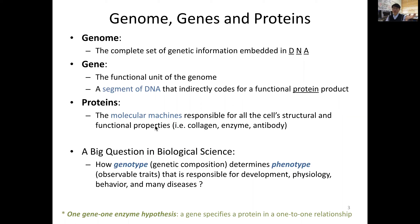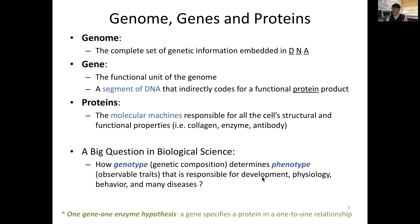For example, a structural protein such as collagen is the most abundant protein in our body. Enzymes are proteins, and antibodies, which serve an important immune function, are also proteins. In biology and biomedical science, the biggest question from a genetic point of view is how genotype or genetic composition determines our phenotype — observable traits such as eye color — which is responsible for development, physiology, behavior, and many diseases.